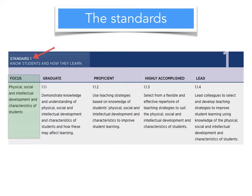Each standard descriptor has a focus. In this case, we're looking at standard descriptor 1.1. The focus is physical, social, and intellectual development and characteristics of students. You can see that they apply at different levels: graduate, proficient, highly accomplished, and lead. You're concerned with the descriptors that end in a number two — so in this case, 1.1.2 is the proficient standard descriptor for the focus of physical, social, and intellectual development and characteristics of students.